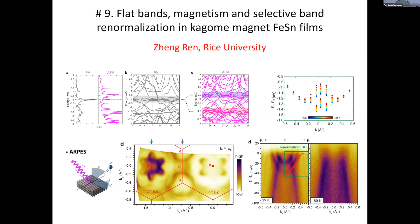FeSn is an antiferromagnet consisting of ferromagnetically ordered iron kagome layers. A flat band is predicted right at the Fermi level by DFT calculation in the paramagnetic state, which is in line with the Mielke kagome flat-band ferromagnetism. In my poster I'm going to show how our ARPES results of an MBE-grown FeSn thin film are consistent with or differ from such a Stoner picture.